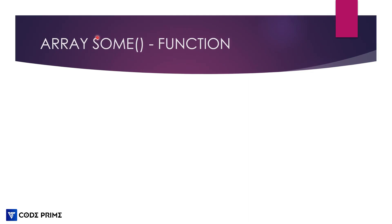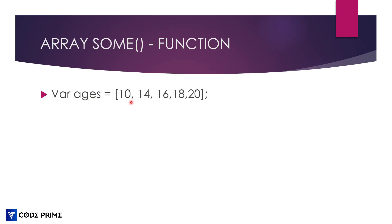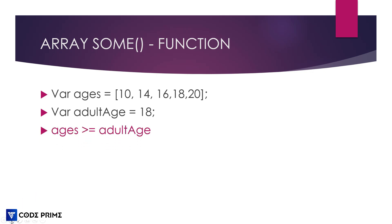First we are going to learn about the Zubiscape array some method and how it works. We'll take an array called ages with values 10, 14, 16, 18, and 20. We want to check whether any value matches the adult age condition of 18. If the age equals 18 it returns true, otherwise false. We could do that using a for loop, but that would be a lengthy process, so we use the array some method instead — a smoother and smaller approach.